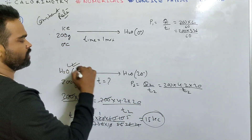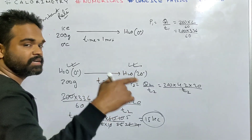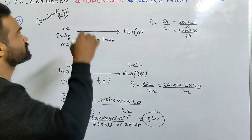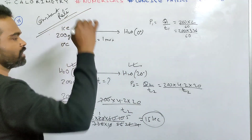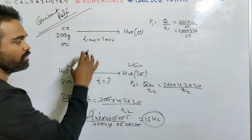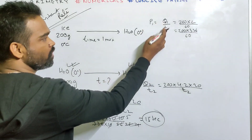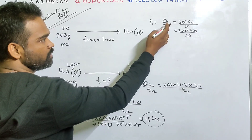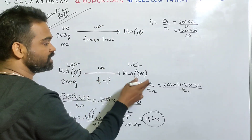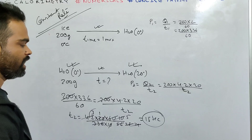In 15 seconds, water at 0 degree changes to water at 20 degree centigrade when heat is supplied at a constant rate. Power will be the same: P1 = P2, P1 = Q1/T1, Q1 = ML, Q2 = MCT — change in temperature.